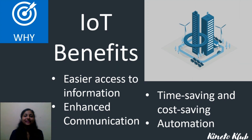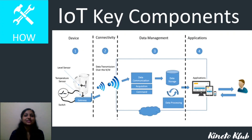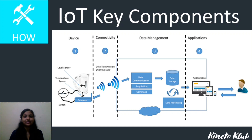Next is how — how does IoT work? Taking the example of an IoT jar, which has sensors built in that measure the temperature and water levels. Data from these sensors is taken over the cloud and pre-processed.